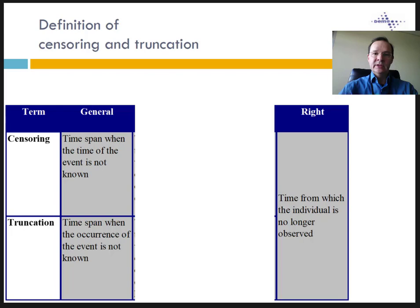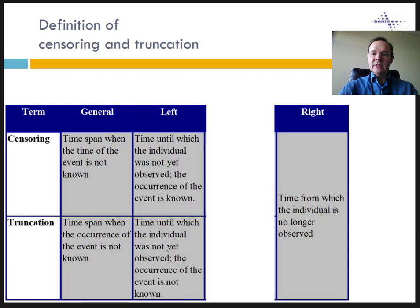Obviously, we don't know the time of the event in truncation either. It is worth noting that the distinction between right censoring and right truncation is not important since the period after right censoring is the future and we don't know the future of individuals. The distinction is clearer and more useful at the left-hand side of the time axis. Left censoring is the time until which the individual was not yet observed but in which the occurrence of the event is known. This is opposed to left truncation — the time until which the individual was not yet observed and in which the occurrence of the event is not known. Truncation is more difficult to handle since some individuals under observation may already have experienced the event and we don't know it. Examples include fertility analysis.